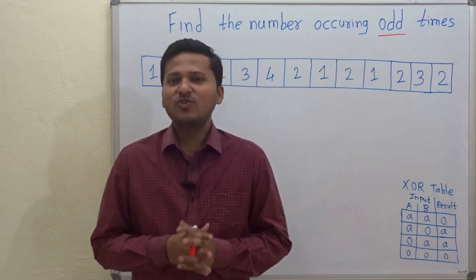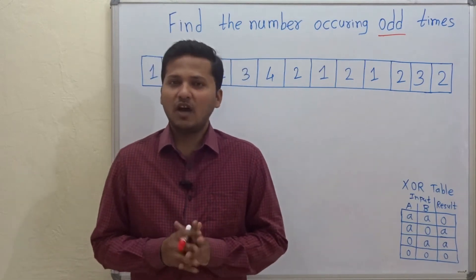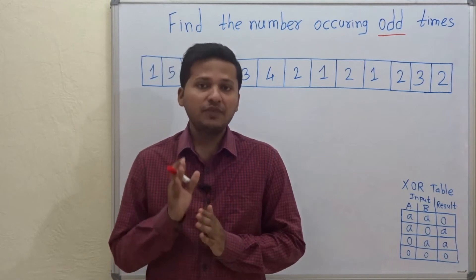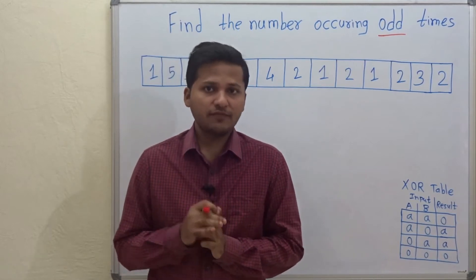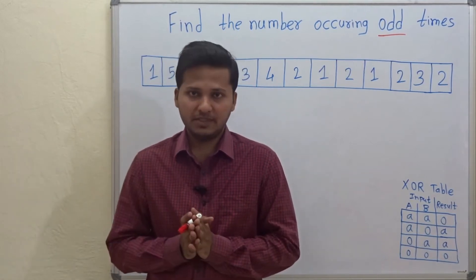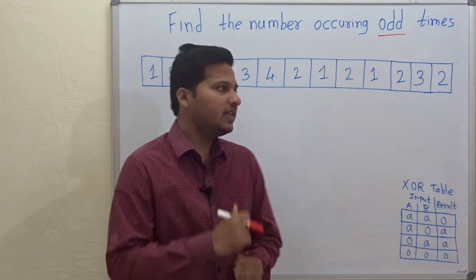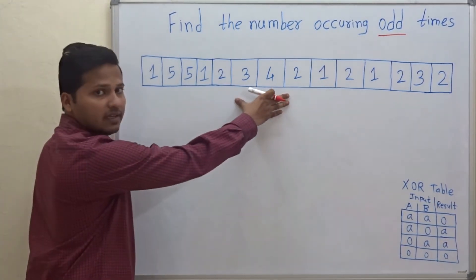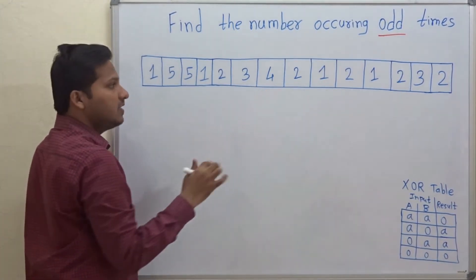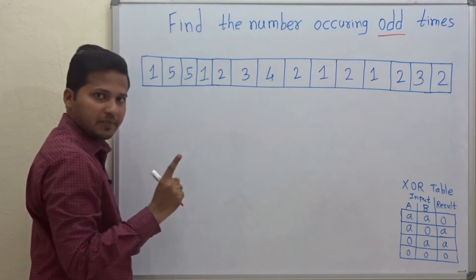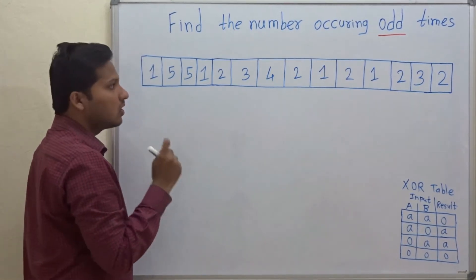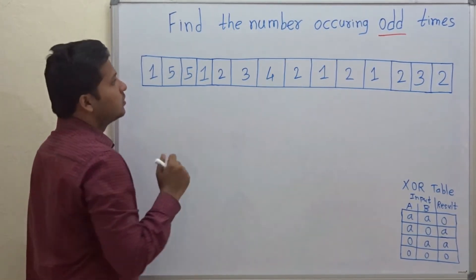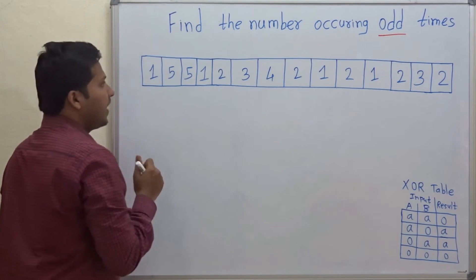Hello friends, today we are going to see how to find a number in an array which occurs an odd number of times. This is the array, and there is one number in the array which occurs odd number of times. So how do we find that?